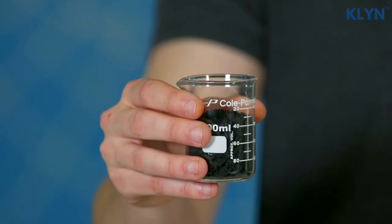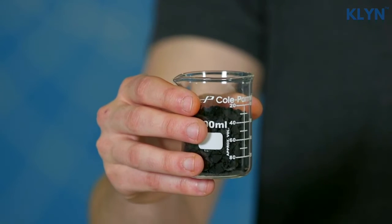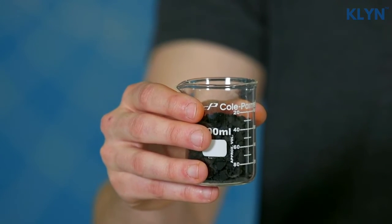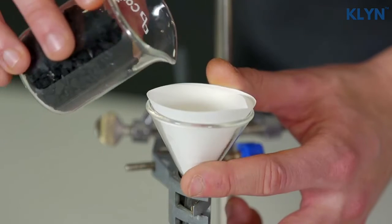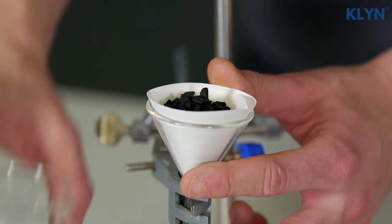These are activated carbon granules. You can't tell, but each granule contains an extensive network of microscopic pores. I'm then going to add some of the carbon to the filter paper inside the funnel. Around two to three teaspoons should be enough.